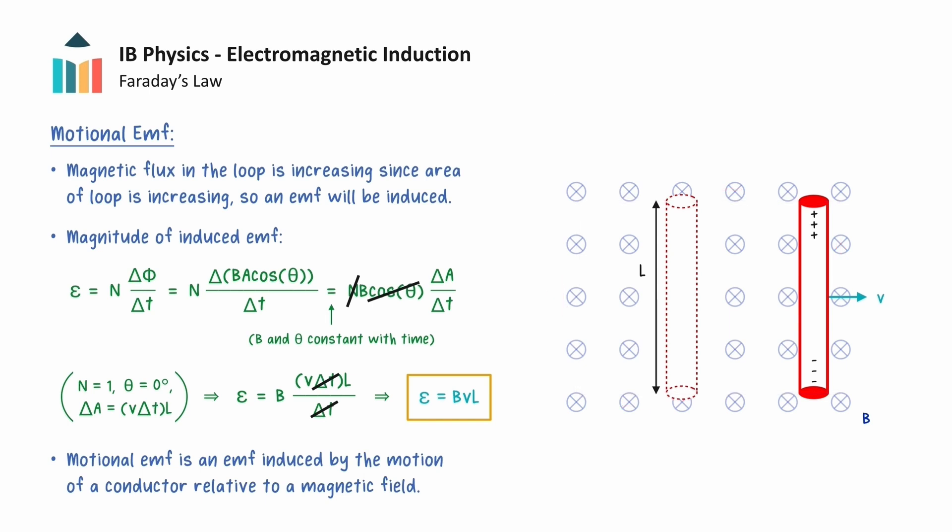Even in the scenario where there is no closed loop and we just have a moving conductor in a magnetic field, the EMF would still be induced across the ends of the rod. Note that this equation is true as long as the magnetic field, velocity, and length of the conductor are mutually perpendicular.